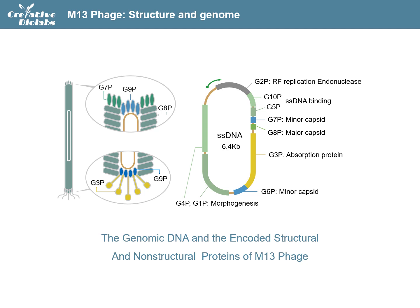The core of M13 phage is a single-stranded circular DNA, which encodes three types of proteins, including the replication proteins, the morphogenetic proteins, and the structural proteins. The current M13 phage display systems for the display of antibodies are based on the P3 region and P8 region of M13 phage.